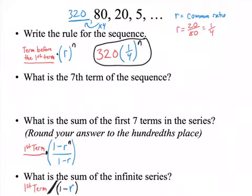That rule comes from the term before the first term, R, and N is what term. So if I want, for instance, the 7th term, can I plug in 7?